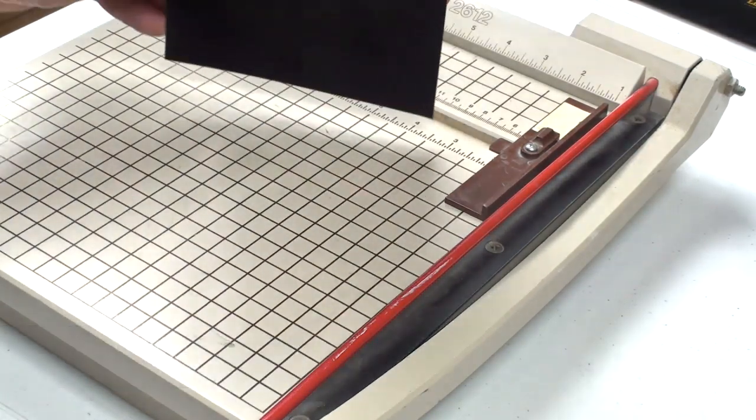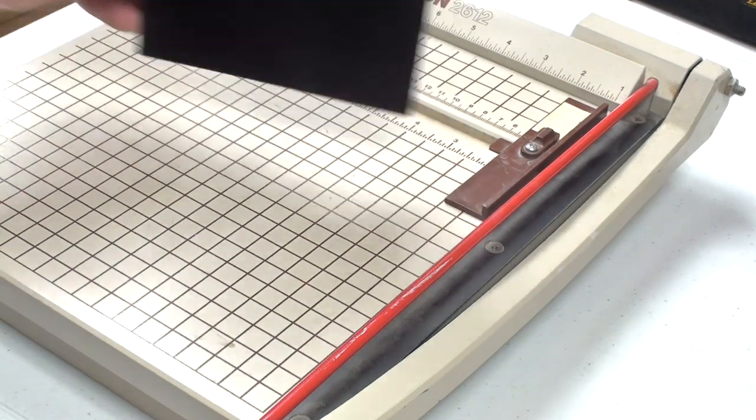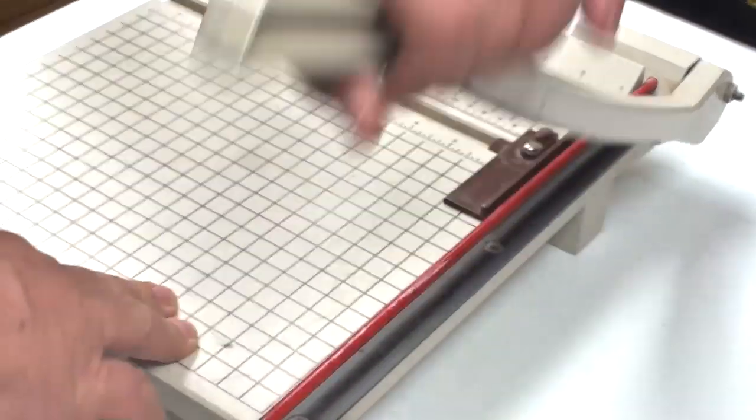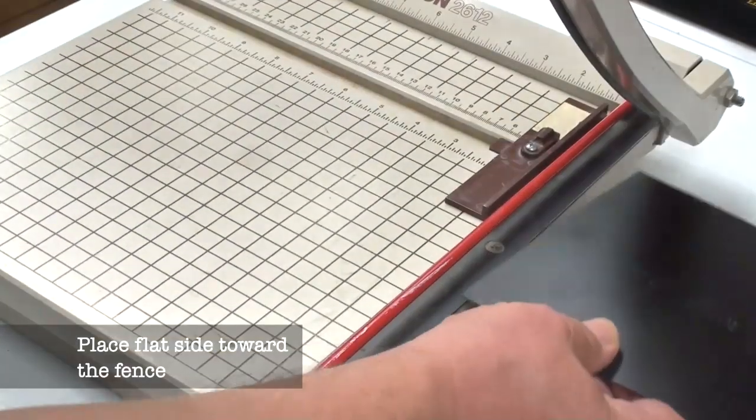First I find which side is square by seeing which rocks on the cutter, and then I cut against a fence that I've installed.